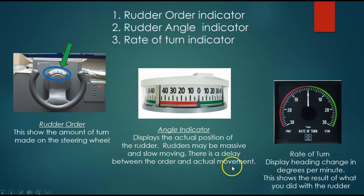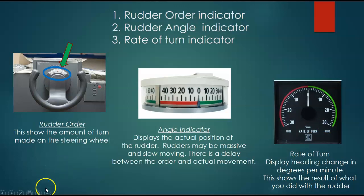There's a third piece of equipment — make sure you read all this stuff. This is called the rate of turn indicator, and it shows us heading change in degrees per minute. It is a function of how fast you turn. If you have a rate of turn of 10 degrees per minute — and that's not rudder angle, that's rate of turn — 10 degrees per minute is going to take you 36 minutes to make a full circle. That's longer than it takes you to drive to Bucksport. It's not an aggressive turn. You can see the rate of turn goes up to 30 degrees, and some ships go a little bit more.